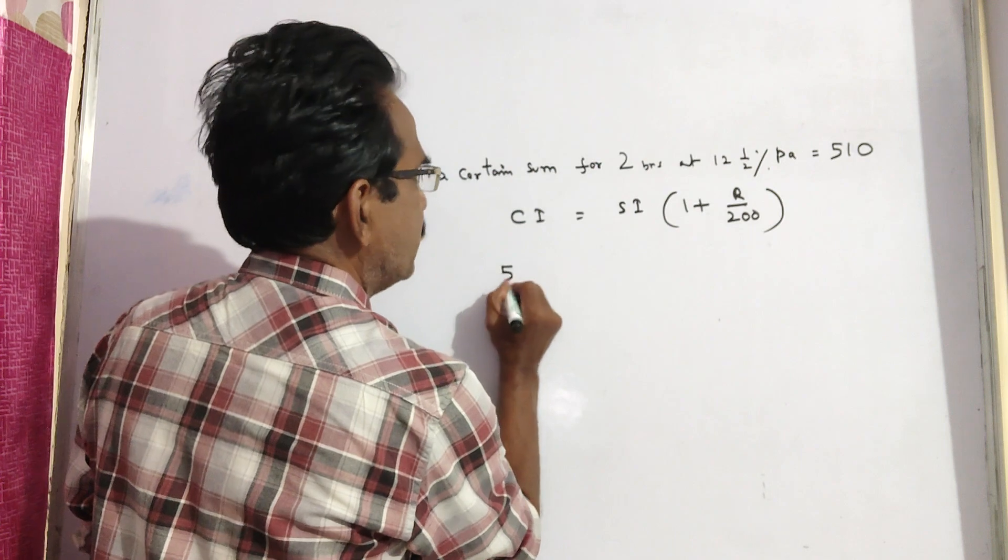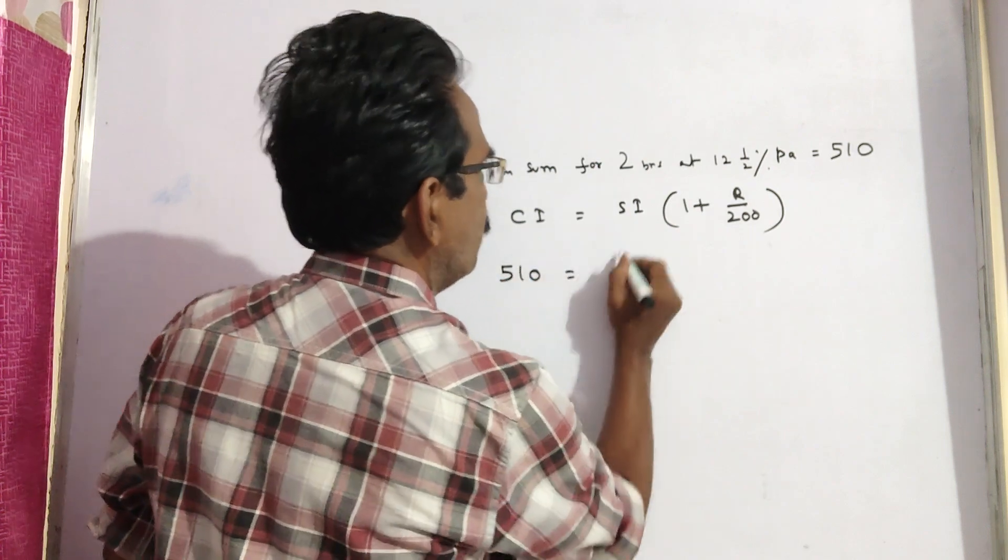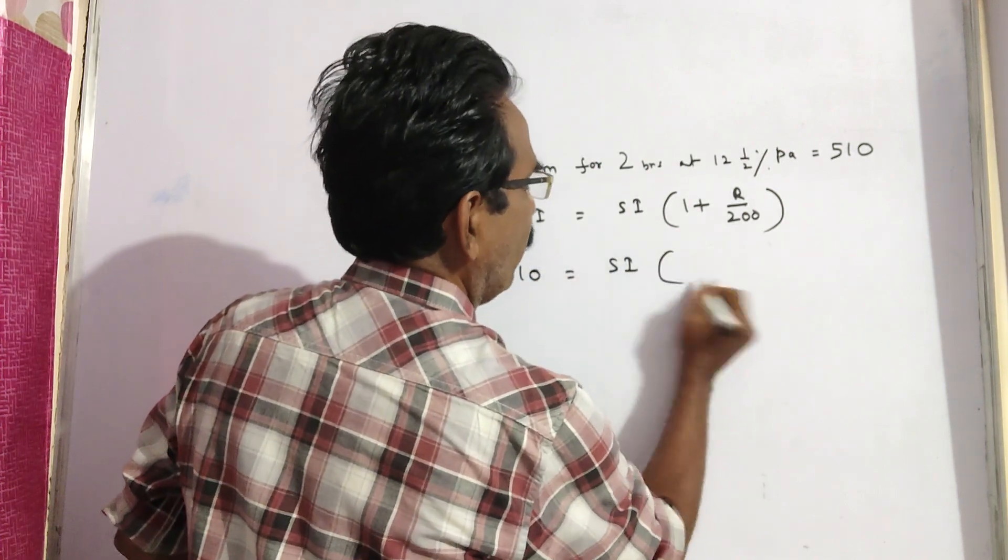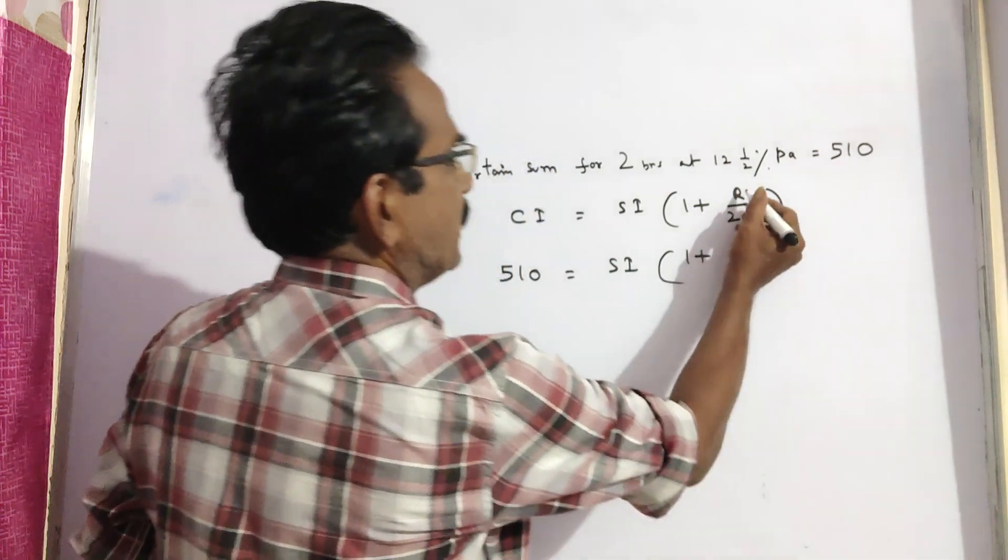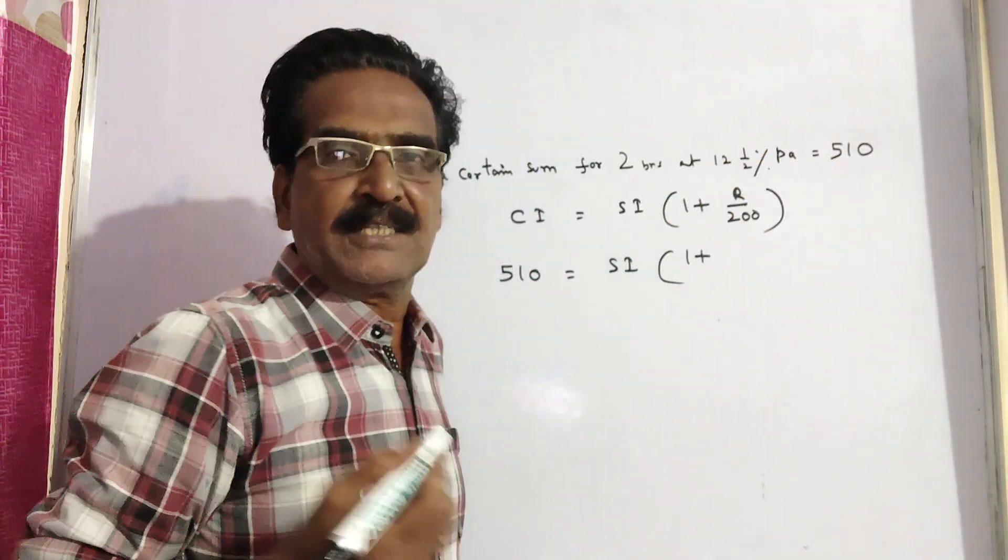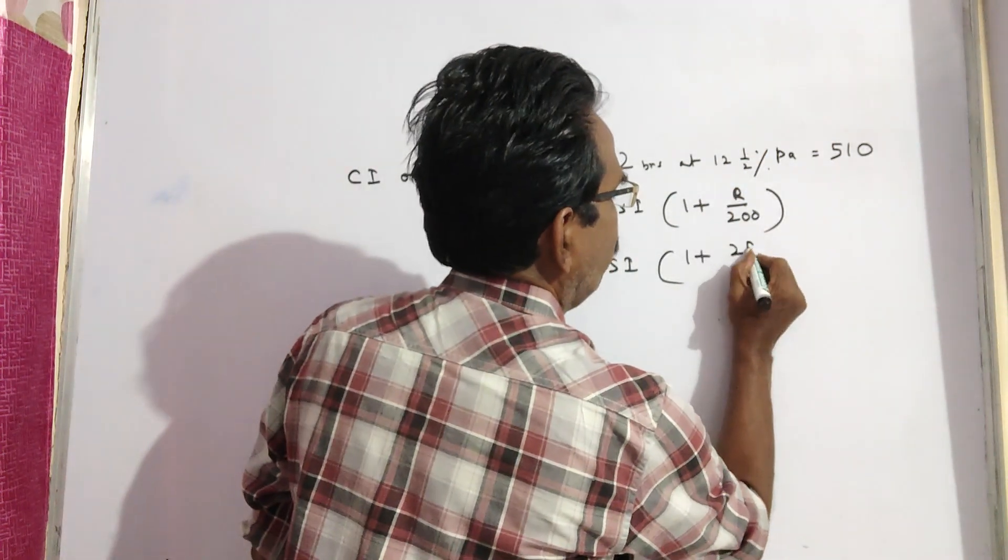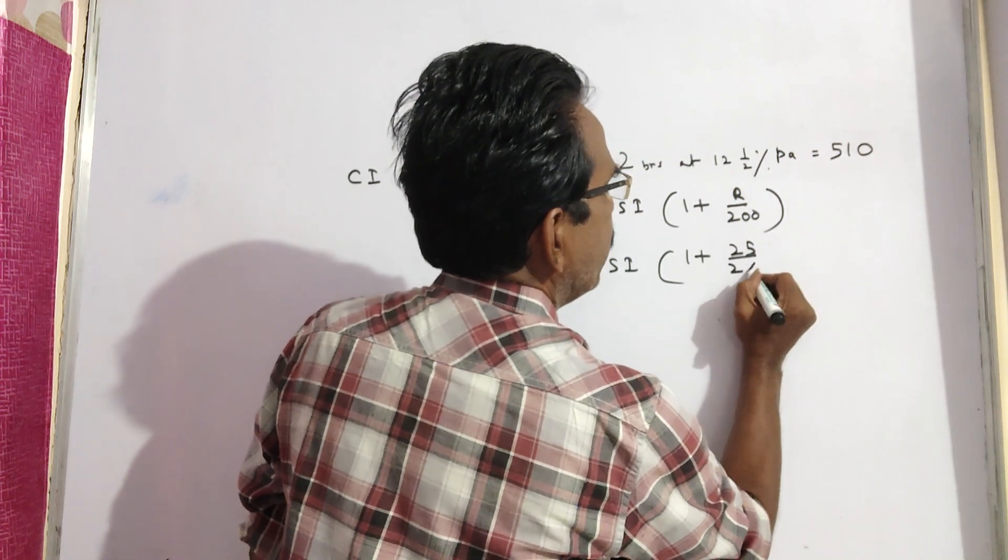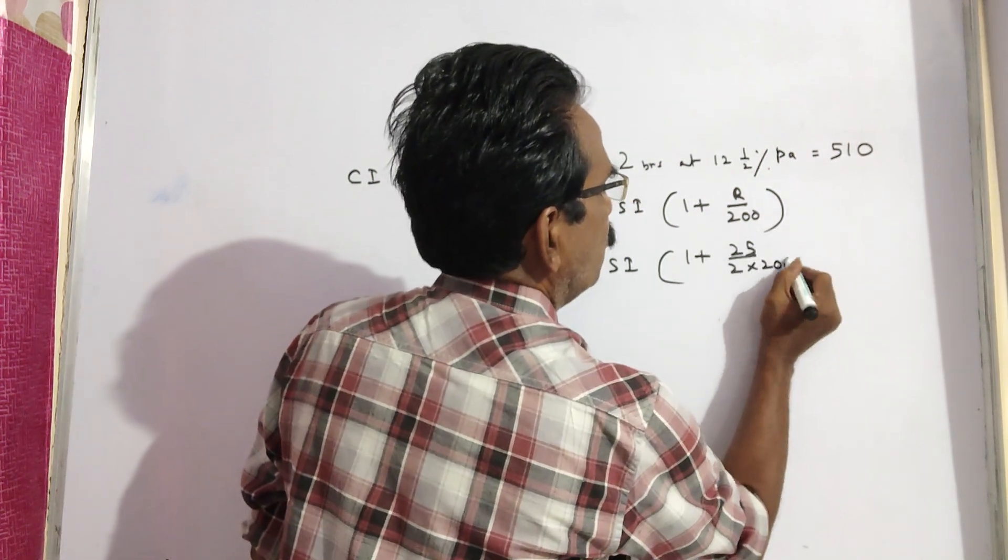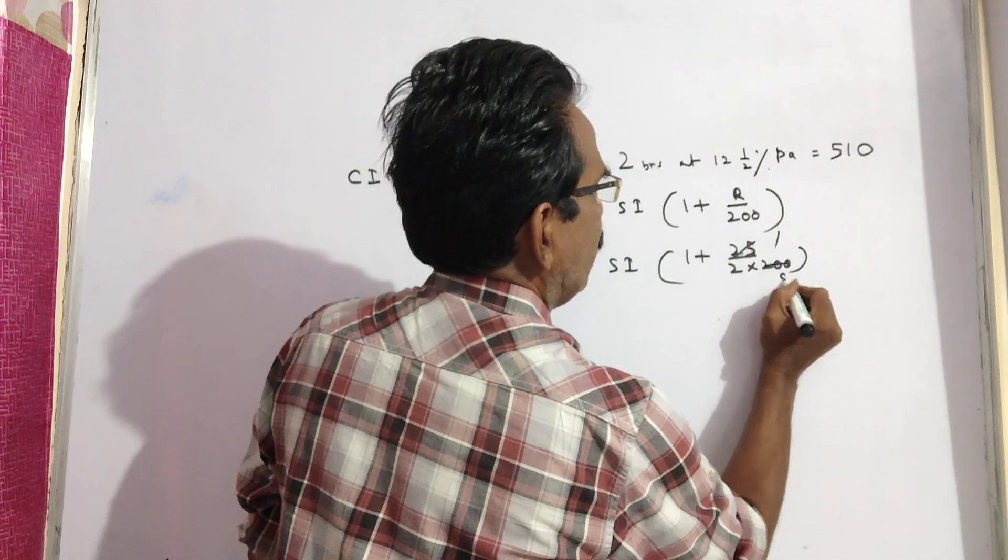So, CI 510 equals SI into 1 plus R by 200. R is 12.5%, which is 25 by 2. So 25 by 2 into 200 gives 1 by 16.